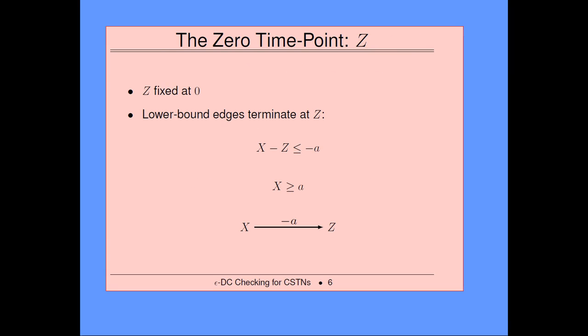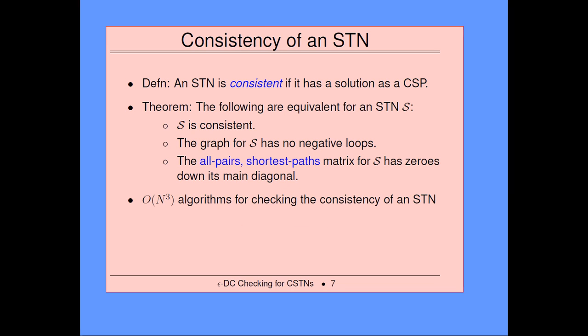The z time point is useful in a number of ways. Primarily for us, lower bound constraints — so x greater than or equal to some bound A — would be represented as z minus x less than or equal to minus A. You see them in the graph as an arrow from x to z with a negative value. That's useful for the earliest first strategy we use to prove completeness. The consistency of a simple temporal network is that the network is consistent if and only if its graph has no negative loops, if and only if the all-pairs shortest path matrix has zeros down its main diagonal. You can do that in polynomial time using Floyd-Warshall or Bellman-Ford.